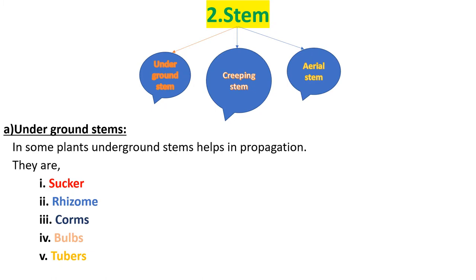Another part of the plant is stem. Stem also helps in vegetative propagation. For our better understanding and convenience, we categorize the stem into three groups: one is underground stems, second is creeping stems, and third one is aerial stems.